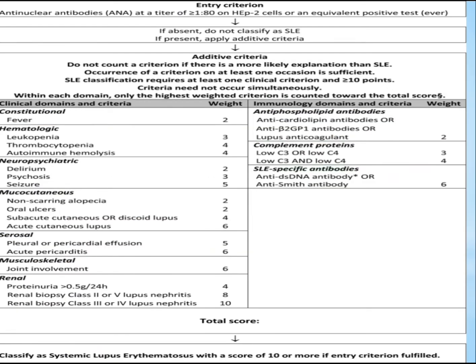This is the same information presented in a different format. Remember, the first requirement is a positive ANA with a titer of at least 1:80 — if absent, you do not classify as SLE. If it is present, you then refer to the additive criteria, and you only classify as SLE with a score of 10 or more once the entry criterion is fulfilled.